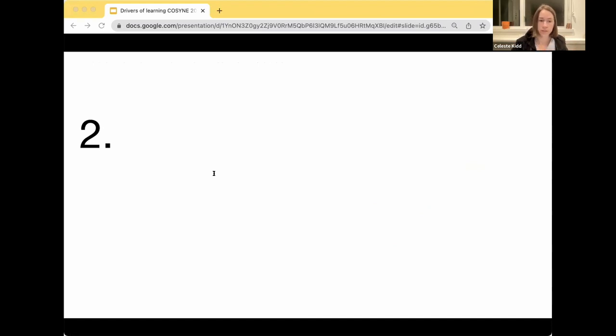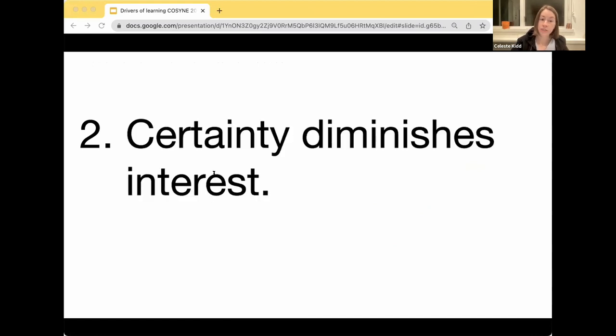The big one is my number two, which is that certainty diminishes interest. When we expect that we know all there is to know, we get bored, our curiosity plummets, and we cannot engage. The problem here is that for really complex kinds of knowledge, things about people and politics instead of items in a sequence, it can be really easy to falsely believe you know all there is to know when actually you do not.